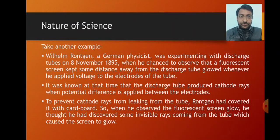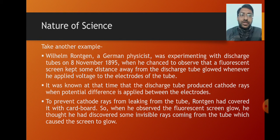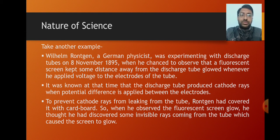Let us understand with the help of one more example. You must have heard the name of Wilhelm Röntgen. He was a German physicist, and he was experimenting with discharge tubes on 8th November 1895. Date ka dhyan rakhna — wo discharge tube ke saath experiment kar raha tha, jahaan cathode rays generate hoti hain. When he was experimenting, he chanced to observe that a fluorescent screen kept at some distance away from the discharge tube glowed whenever he applied voltage to the electrodes of the tube. Jab bhi wo discharge tube ke electrodes mein voltage apply karta tha, us fluorescent screen pe chamak aati thi — wo glow karti thi.